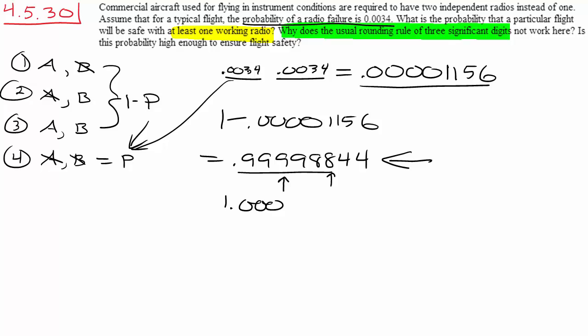So remember, dash technique: simply multiply your dashes. Number of dashes for how many things you are dealing with. In this case two radios, so two dashes. Whenever we have an at least one question, it's always easier to do one minus the opposite. And the opposite of at least one thing happening is none of those things happening. So the opposite of at least one working radio is none of the radios are working.